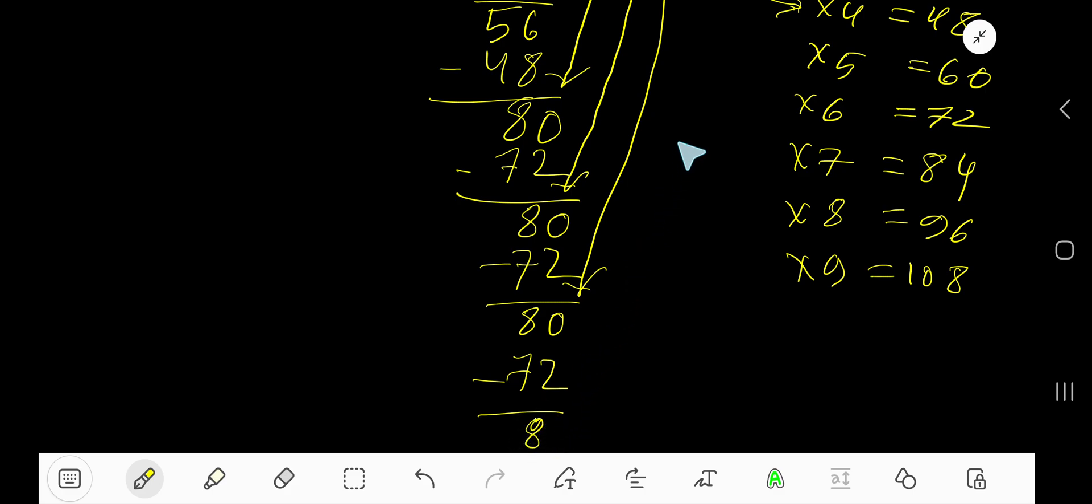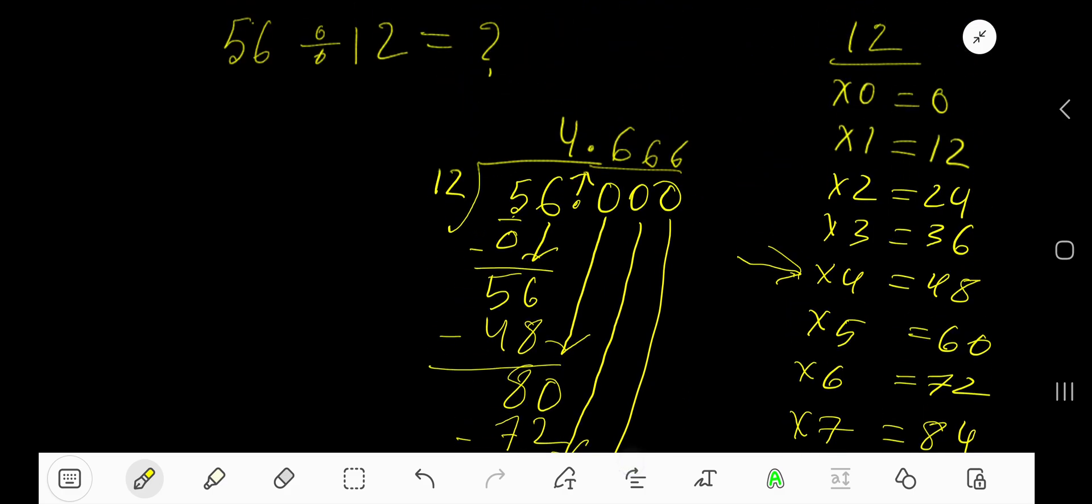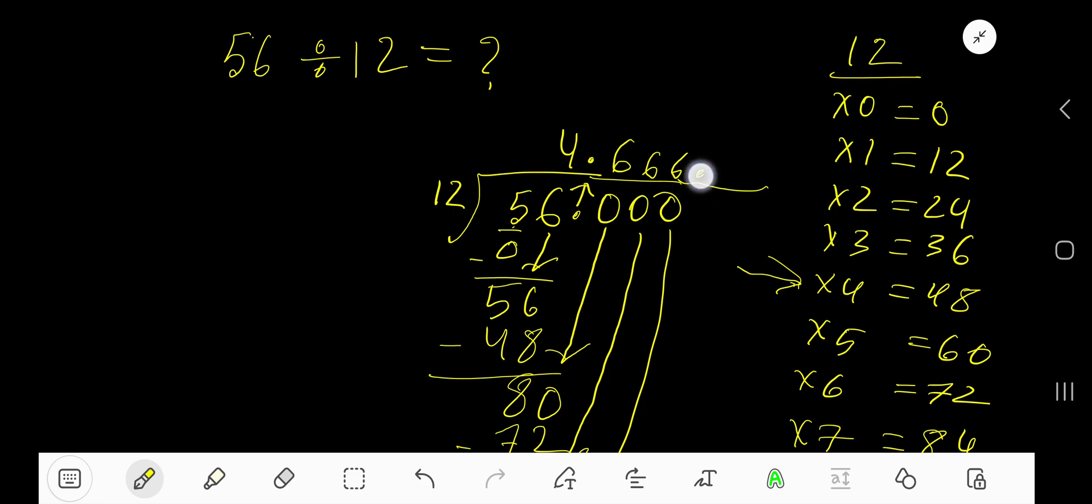You can bring down more zeros. Since this process is continuing, you can place here three dots. So this is the answer. Look, you can write the answer placing a bar over 6 because this digit is repeated. 4.6 with a bar, this is the result.